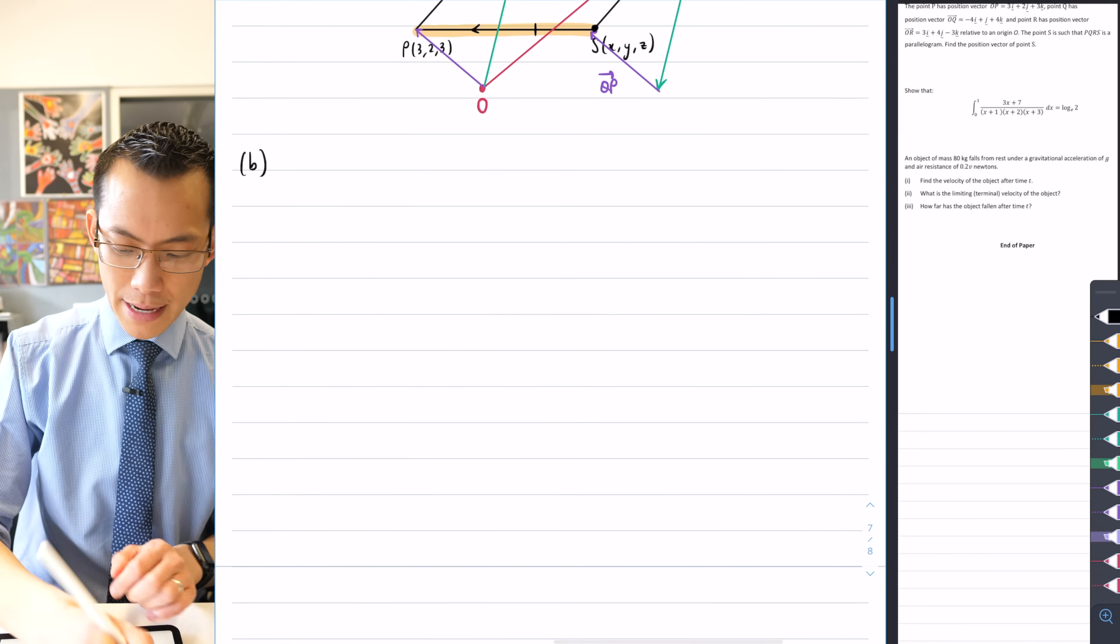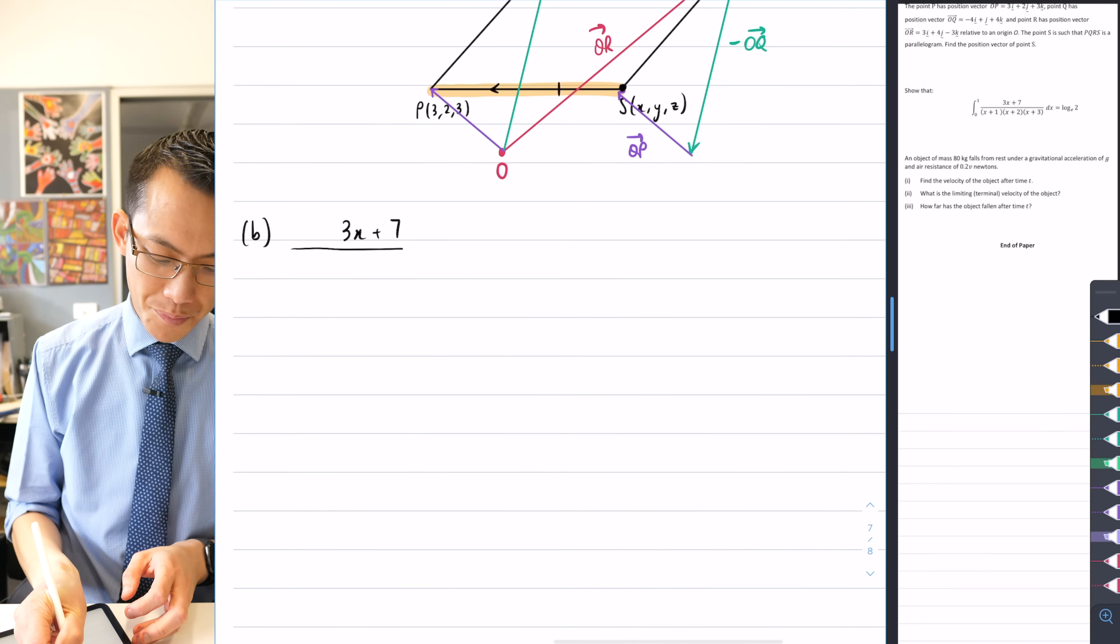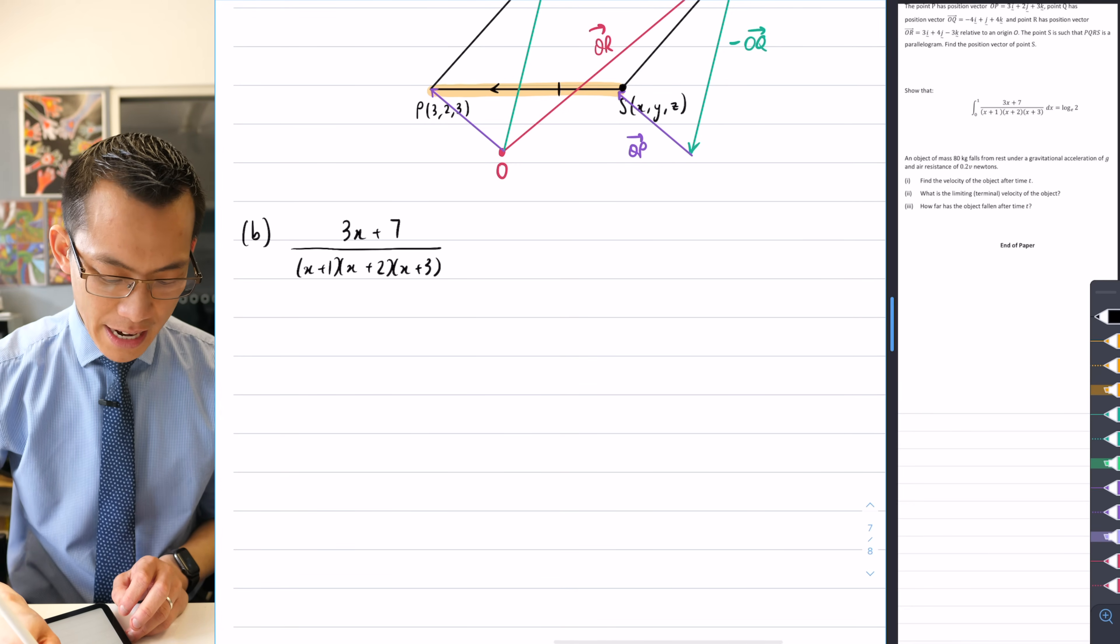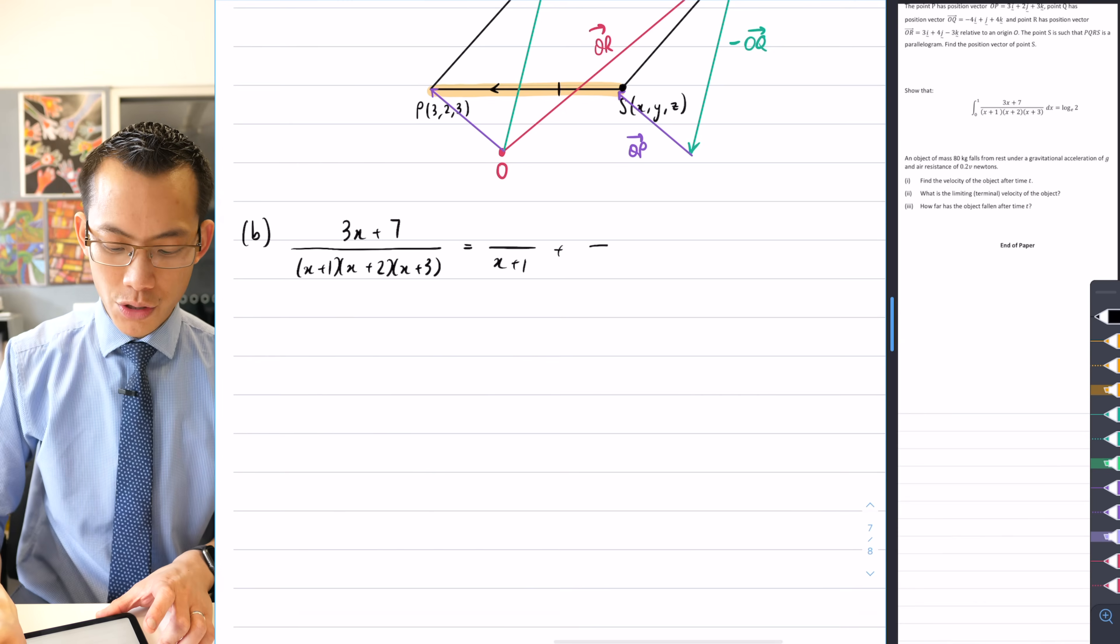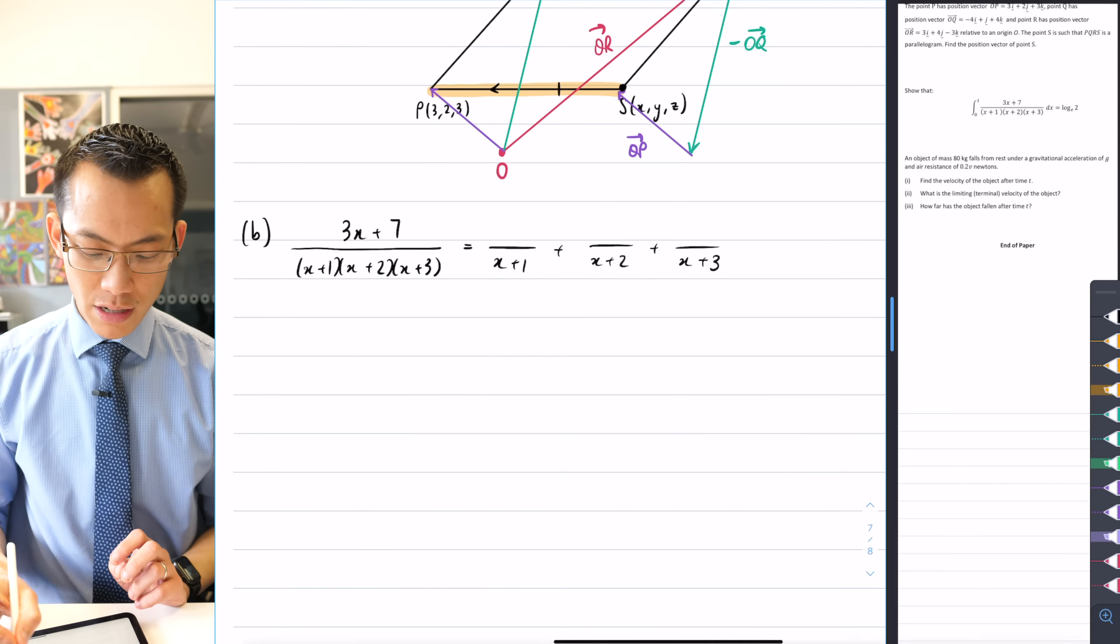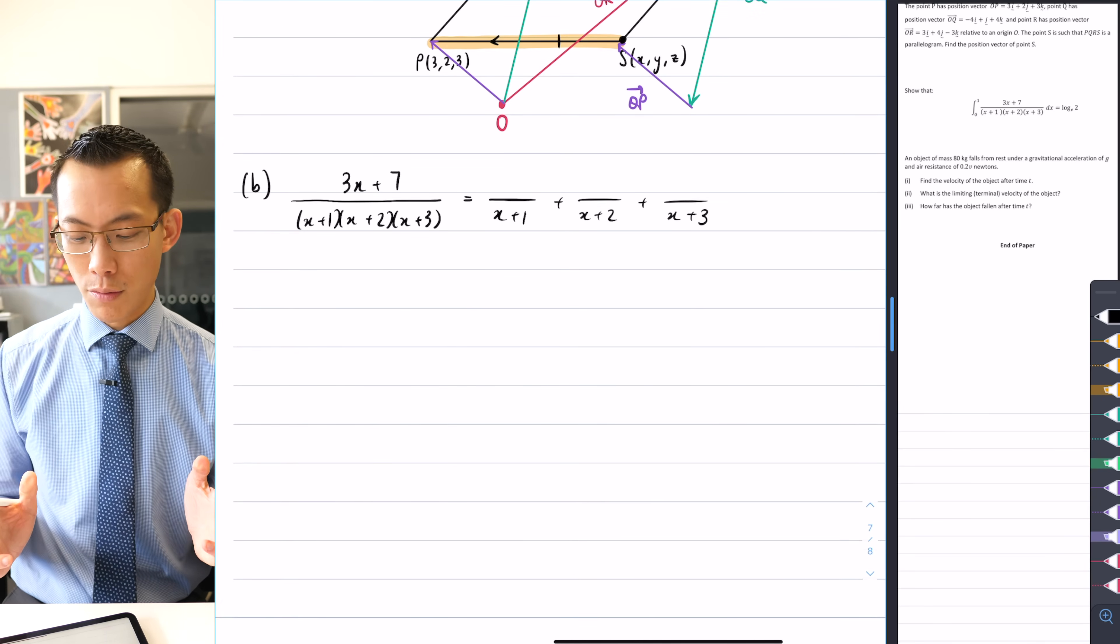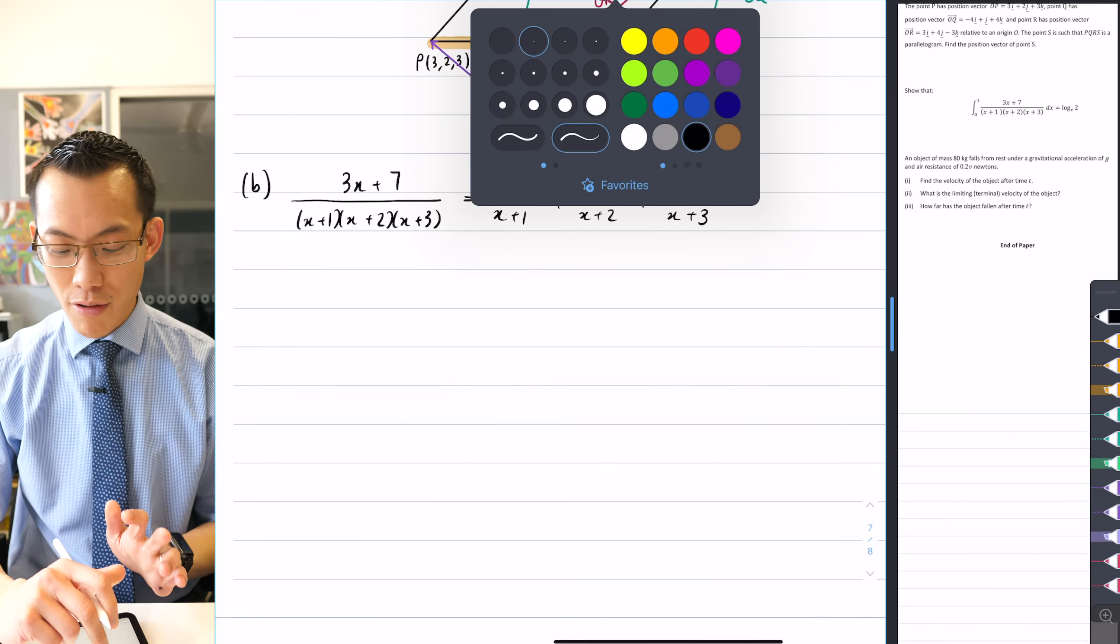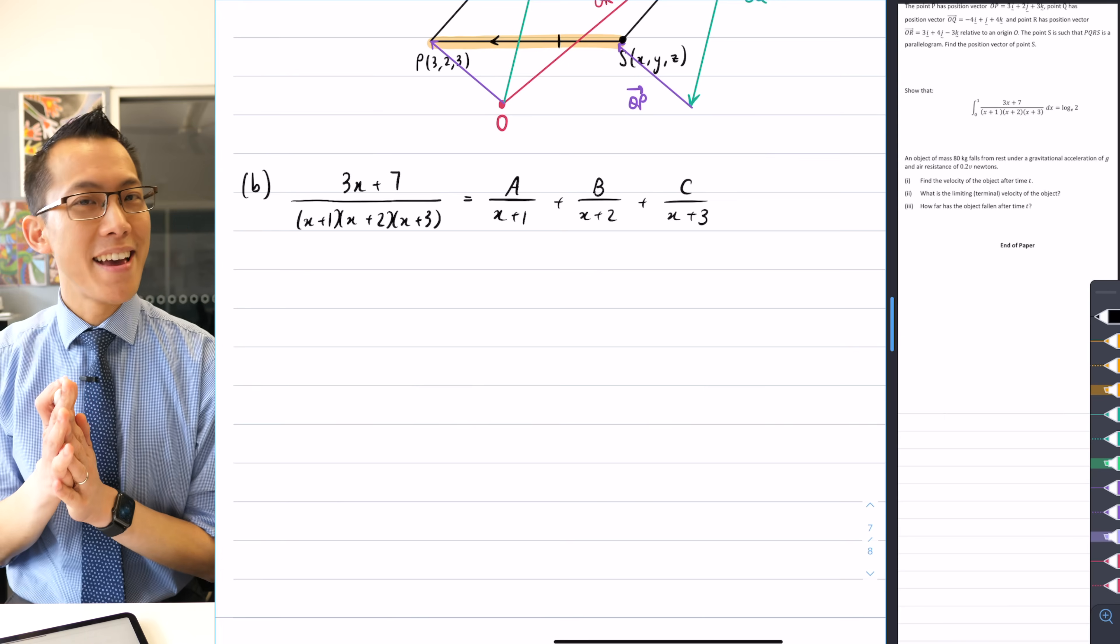So let's have a go. This is part B and what we want to find is 3x plus 7 all divided by (x+1)(x+2)(x+3), and what we want to do is state that as three separate fractions: A/(x+1), B/(x+2), and C/(x+3). Now because these are all linear factors, I don't need to worry about introducing quadratic factors which will have linear numerators, so therefore I can just call them all constants. I'm going to call this capital A, capital B, capital C. Alright, how do I do this?